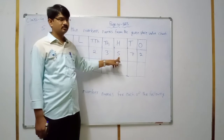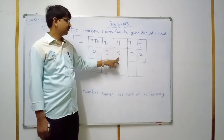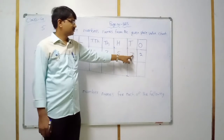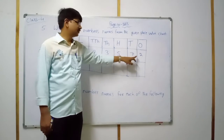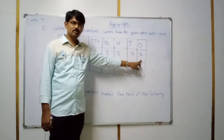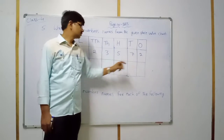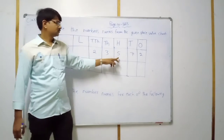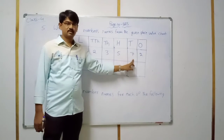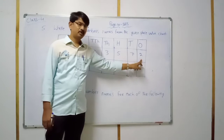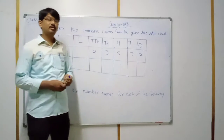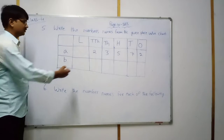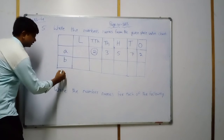Next, at the thousands place, 3 is here — 3 into thousand equals three thousand. Then five at the hundreds place — five hundred. At the tens place, seven tens equals seventy. At the ones place, 2 is here — two. So the number is 23,572.